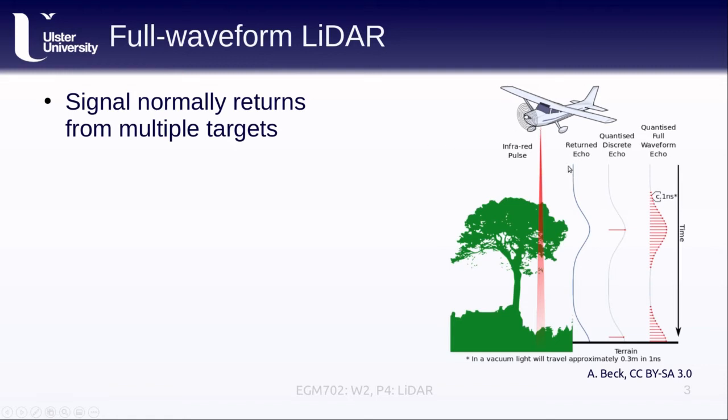So that looks a little bit like this. We might see the returned echo showing the signal strength as a function of time that is returned, which again corresponds to the distance between the sensor and the target. This might be quantized, where we either see the peak of each of these different signal returns, or we might also have information at more than one step along the way.